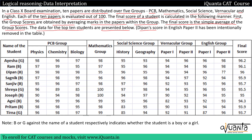Dipan's score in English paper 2 has been intentionally removed from the table. In the table we have the names of 10 students. At the bottom we have been given a note — B or G against the name of a student respectively indicates whether the student is a boy or a girl. So Ayesha is a girl, Ram is a boy, Dipan is a boy.